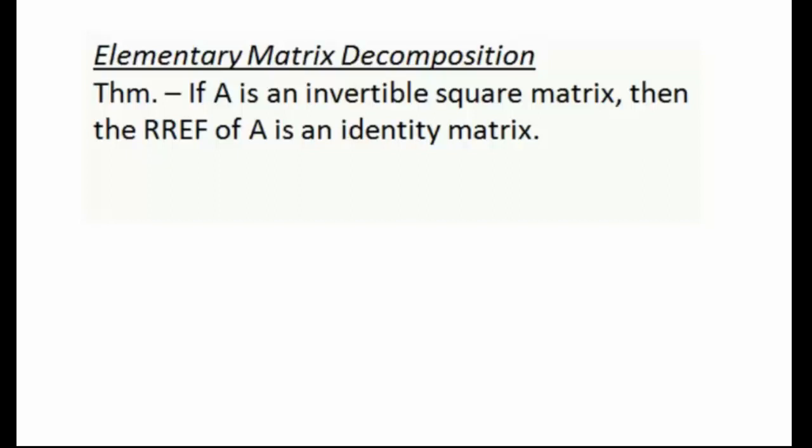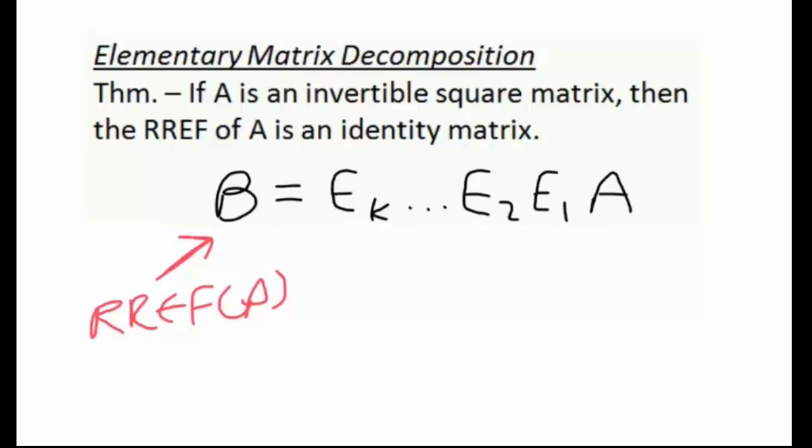Now this ties together with a theorem that we saw in Lesson 7, and that theorem said B, which was the reduced row echelon form of A, was equal to a certain product of elementary matrices on the left-hand side of matrix A. So we've seen this theorem already. Now the one we're taking a look at right now is just a special case for square matrix when B happens to be equal to the identity matrix.